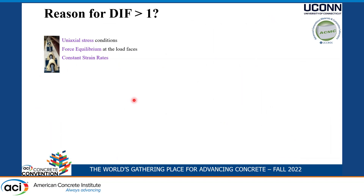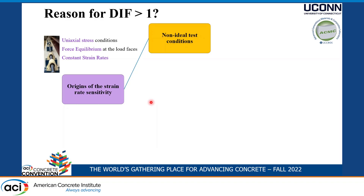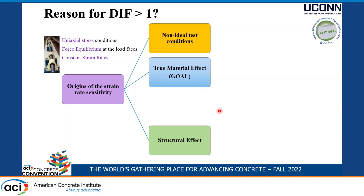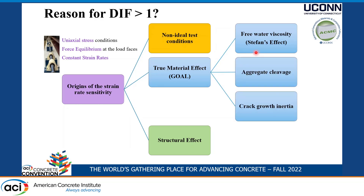What is the reason the dynamic impact factor is larger than one? There are origins of strain rate sensitivity. What you measure in the lab as a dynamic impact factor has several components: non-ideal test conditions, which can be minimized; the true material effect, which is the goal to isolate; and the structural effect. The true material effect is based on free water viscosity, the Stefan effect, aggregate cleavage, and crack growth inertia — contributions from the material explaining true strain rate dependency.